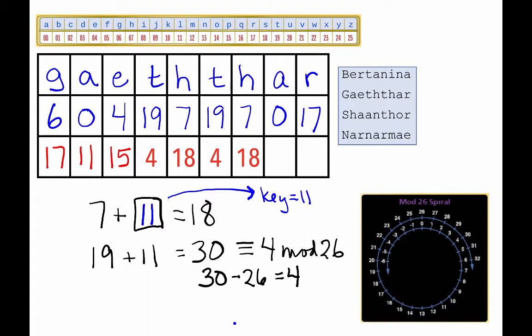19 plus 11 is 4 mod 26, as we saw, and 7 plus 11 is 18, 0 plus 11 is still 11. And finally, we have one left to do R,